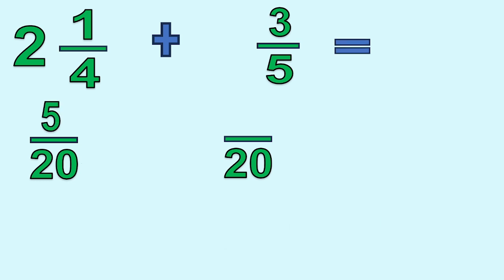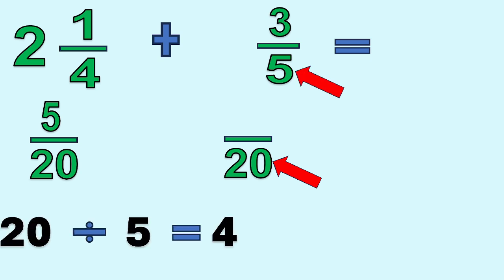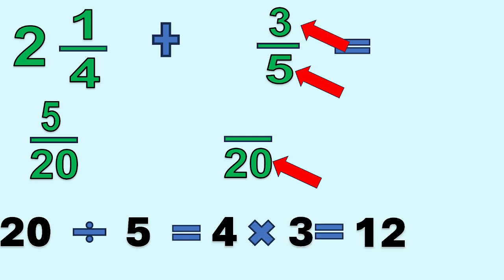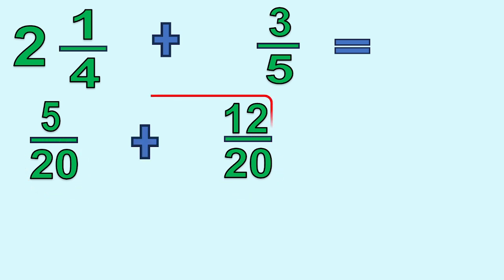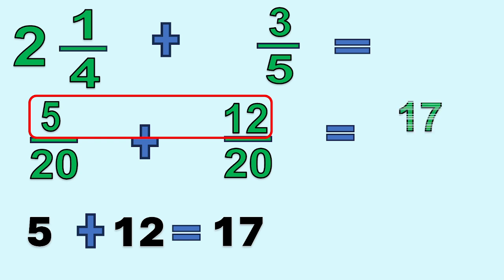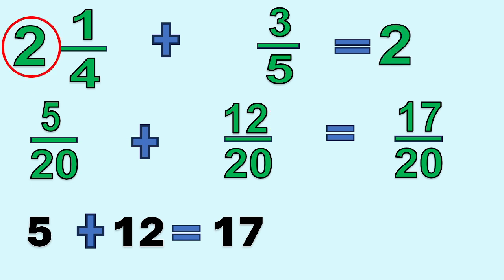Next is the second fraction. Divide the LCD 20 by denominator 5: 20 divided by 5 equals 4. Then multiply the answer by numerator 3: 4 times 3 equals 12. So our new numerator will be 12. We can add now because the denominators are already the same. Add the numerators: 5 plus 12 equals 17. Copy the LCD 20. Then copy the whole number 2. So our final answer is 2 and 17 twentieths.